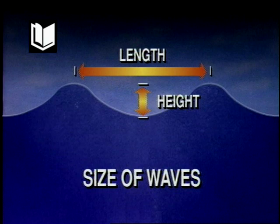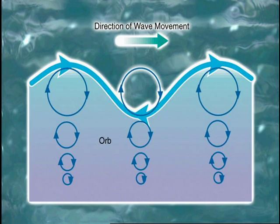Waves are measured in terms of their height, length, and period. The wavelength is the horizontal distance between successive crests, and the period is the time required for two successive crests to pass a given point. The water particles within a wave move in an orbital motion as the waves move forward.